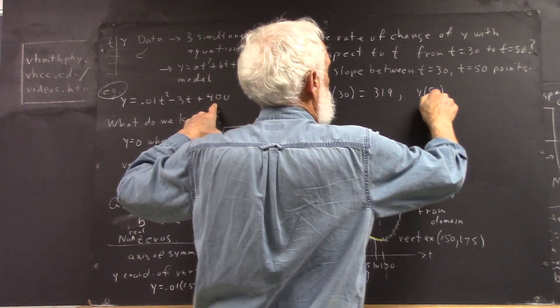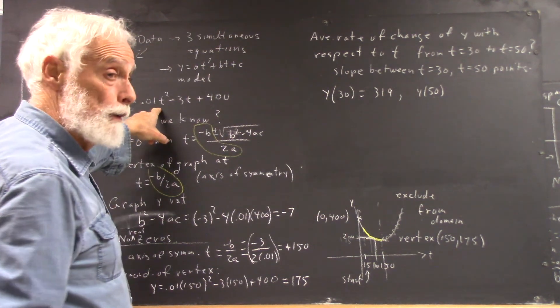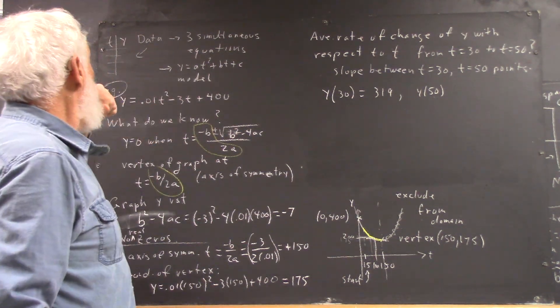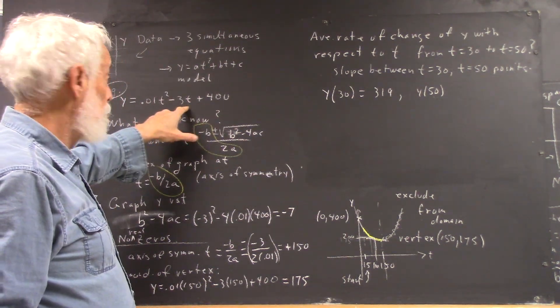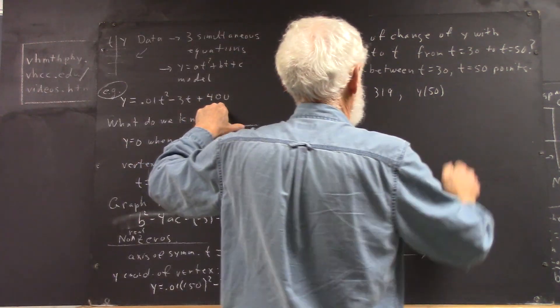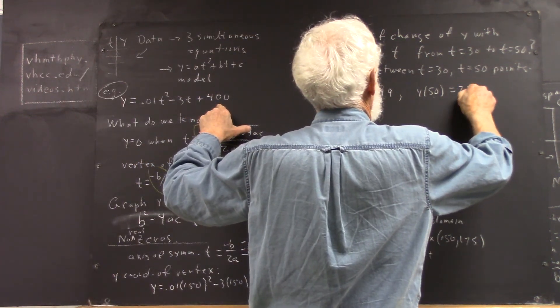And y of 50, 50 squared is 2,500, so that's going to give us 25, minus 150, that's minus 125, that's going to give us 275.